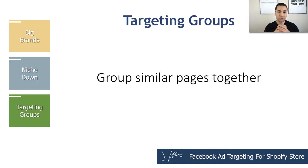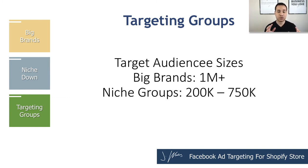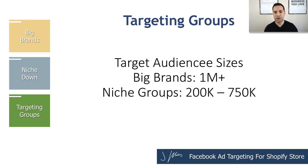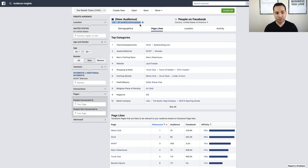Once you have your full list of targetable pages, it's time to group them together into similar pages. The criteria for grouping is 100% up to you, because by this time you are an expert — you've identified your top three to five brands and gone through hundreds of Facebook pages. What's important is that your groupings are large enough for your ads to be successful and give you enough runway to scale. You'll make two types of groups: big brands with over a million in audience size, and niche-down groups ranging from 200K to 750K. The audience size is shown right at the top of the insights tool.